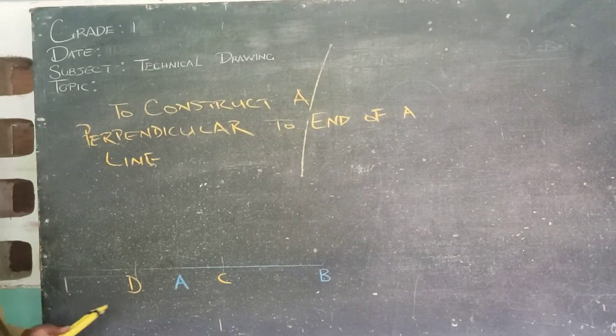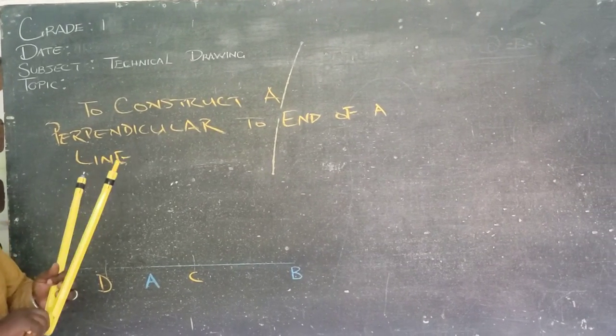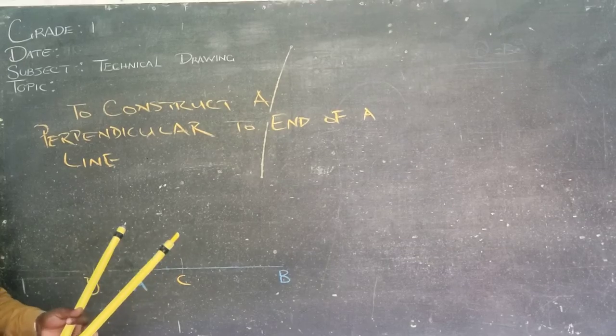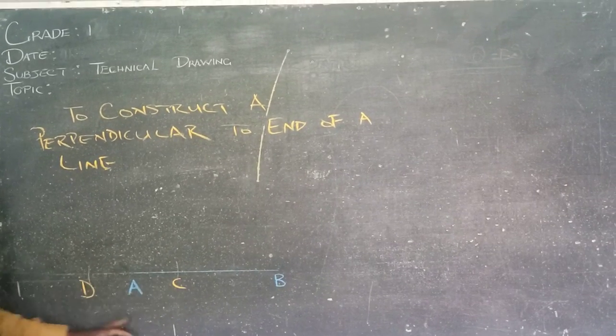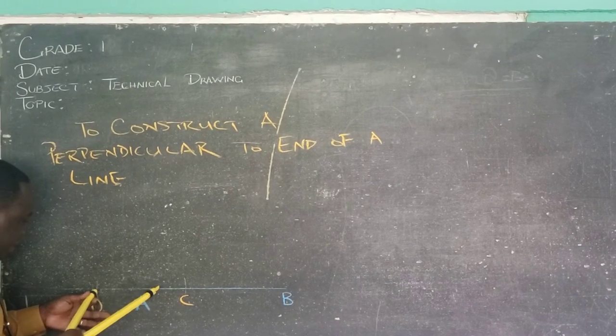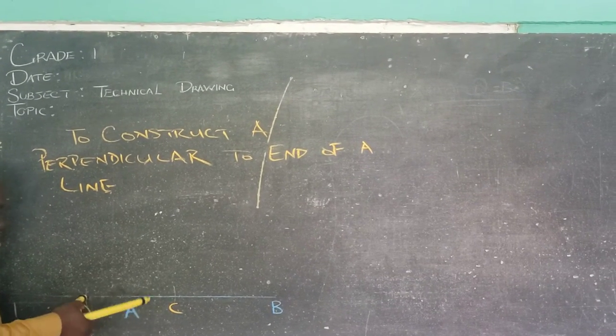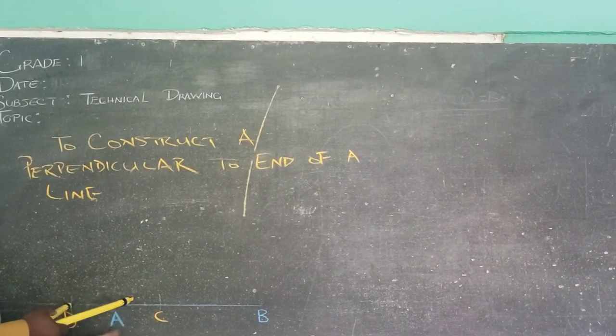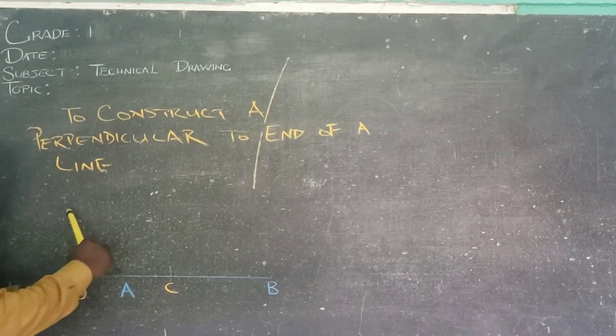Now what do I do from there? I open my compass to a suitable radius that is going to be greater than AC or greater than AD. So I will go to D. I can open my compass to a radius that is greater than AC or AD, and I will swing an arc.